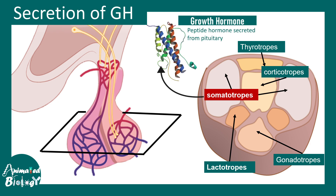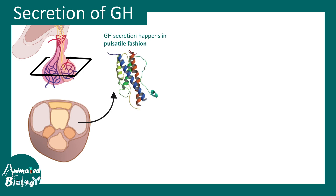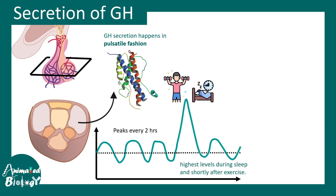Growth hormone is a peptide hormone that acts via specific receptors in many cells. It is secreted in a pulsatile fashion — the peak of secretion occurs roughly every two hours, and it really peaks high when we exercise or sleep, especially in the early morning time.